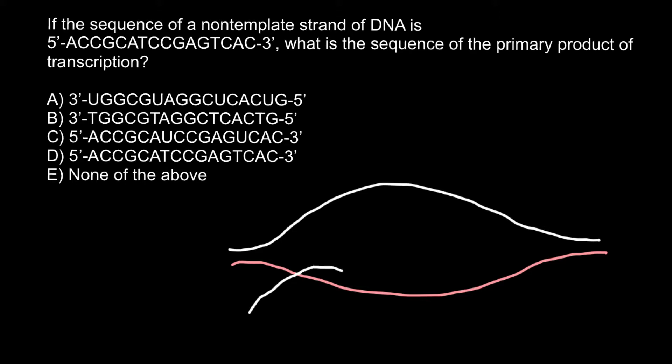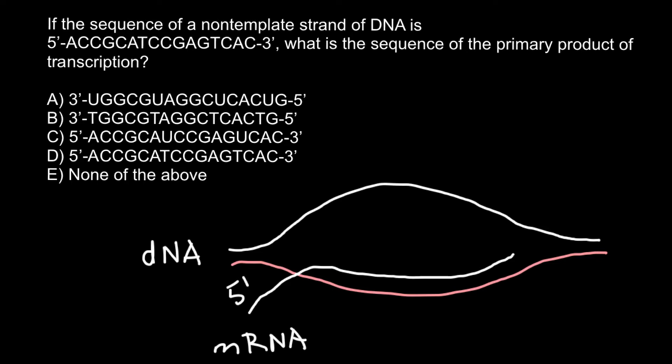Here would be our messenger RNA — this is mRNA — and these two strands would be DNA. You have to remember that any strand of DNA grows from the 5' end to the 3' end, and this is also true for messenger RNA. So this end would be the 5' end and this one would be the 3' end.